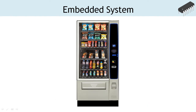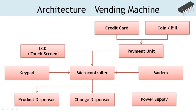Let's understand the different components of an embedded system with an example of a vending machine. A vending machine is an automated system that provides items such as snacks, beverages, chocolates, lottery tickets, newspaper, etc. to the consumer. A typical vending machine may have the architecture as shown in the diagram. The payment module manages payment through coins, bills, and credit card. The credit card module has an electromechanical system to accept the card, read its details, and contact the financial institution to get required approval for the payment. The coin and bill module also has an electromechanical system to accept coins and bills, detect the denomination, and calculate the payment made.